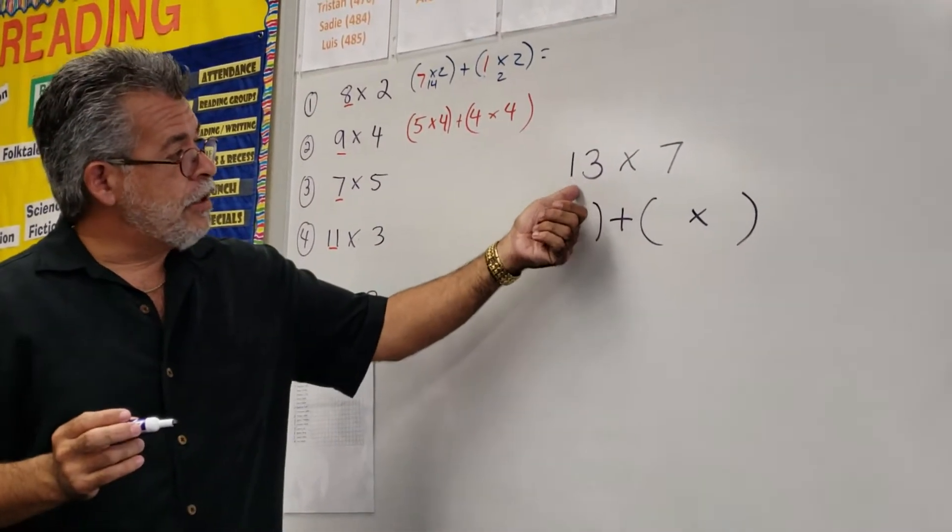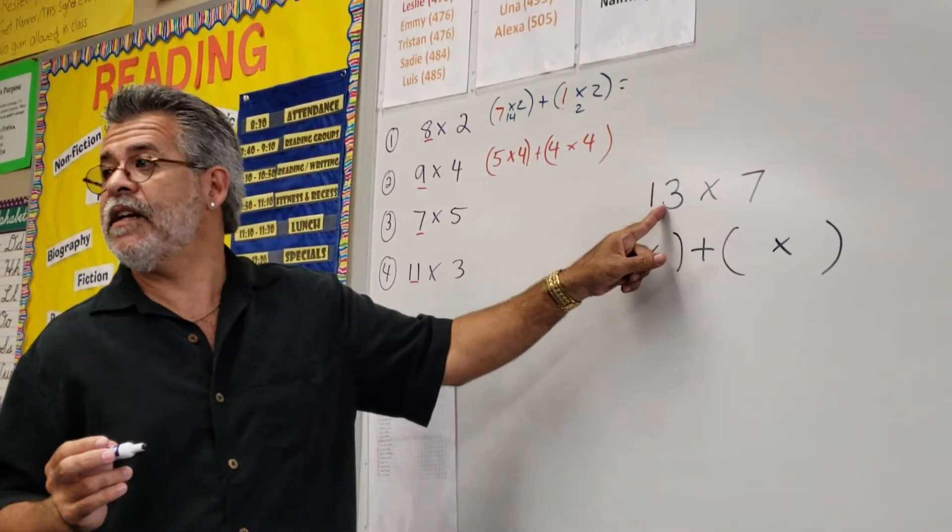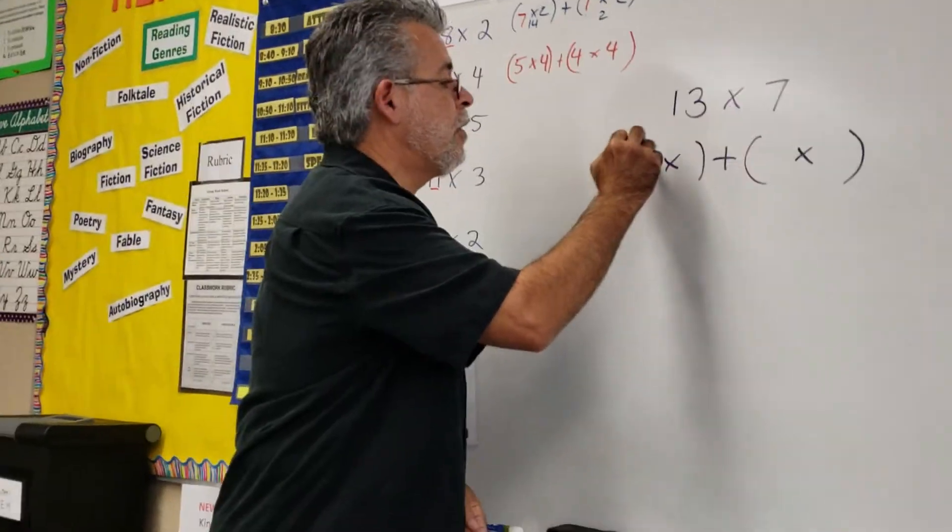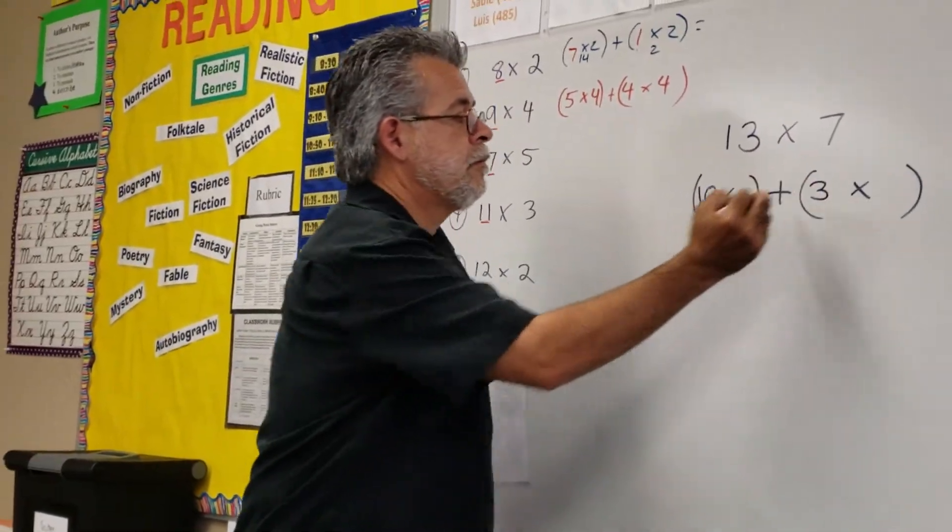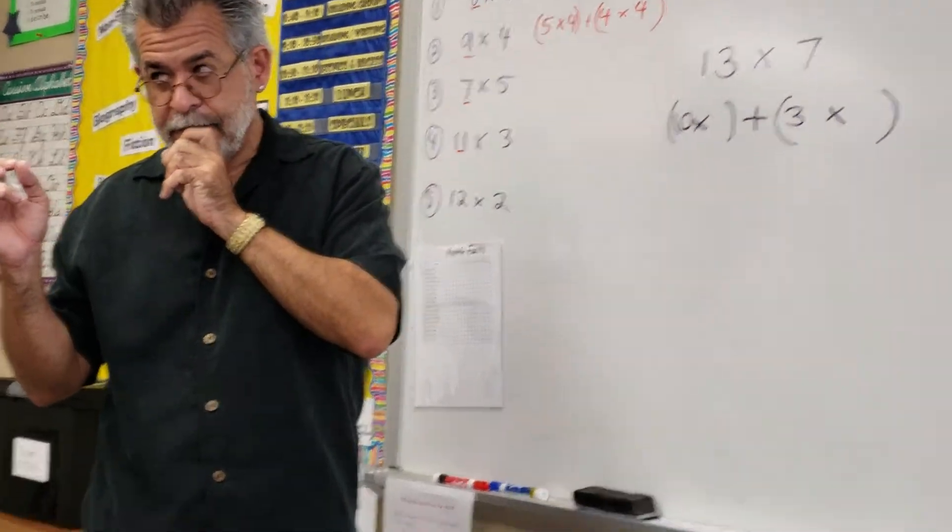Now if I have a two-digit number, I want to get something with a zero on the end. Can I get 20 out of 13? No. Can I get 10 out of 13? Okay, 10. How much is left over? Three. That's the 13.